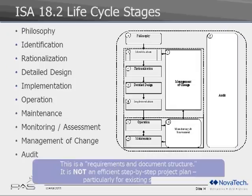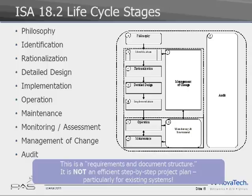The next slide covers the 18.2 life cycle stages — from developing an initial philosophy all the way through audit, management of change, and long-term operation of the alarms. This is basically a requirements and document structure. It's not by itself an efficient system for performing an alarm rationalization. The seven-step process helps lead you through that using the 18.2 requirements.